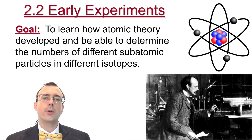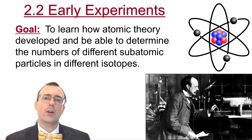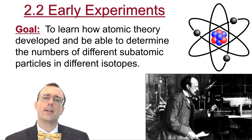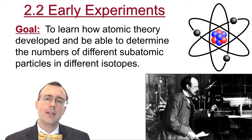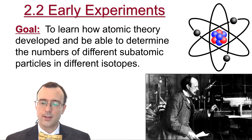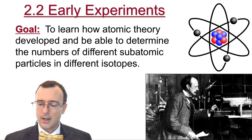This is Lesson 2.2, and today we're going to be talking about early experiments in the development of atomic theory. Our goal today is to understand how atomic theory developed and to be able to determine the numbers of different subatomic particles in different isotopes.